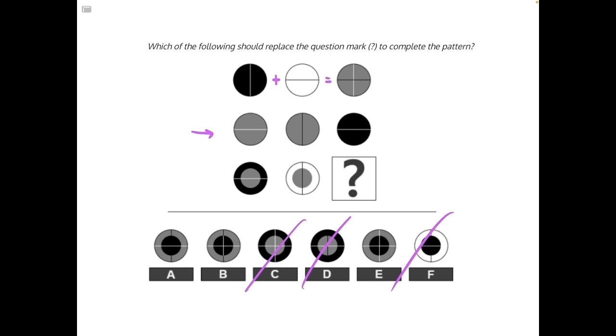But the pattern of logic still tracks, so we can apply it to our third row to find our final answer. We have a white horizontal line and a black vertical line, so we need to find a black vertical line and a white horizontal line, which eliminates us down to answer choice A, our correct answer.